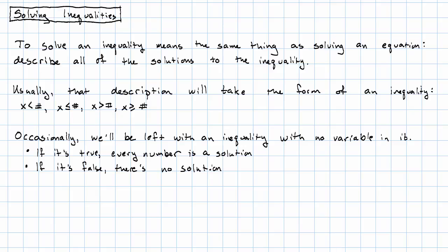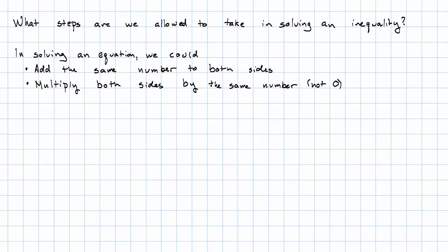But just like with equations, the main question we want to answer is, how can we get to that point? That is, what steps are we allowed to take in solving an inequality? Remember the steps that we were allowed to take in solving an equation. We could add the same number to both sides, and we could multiply both sides by the same number as long as it wasn't zero.